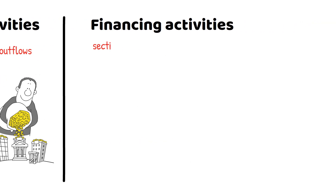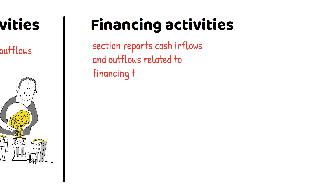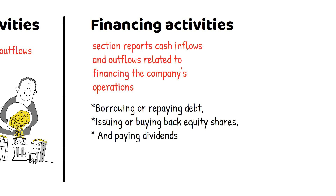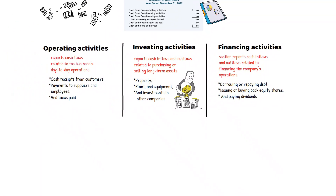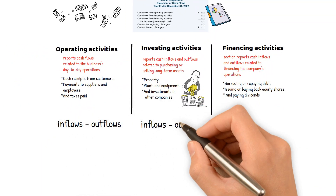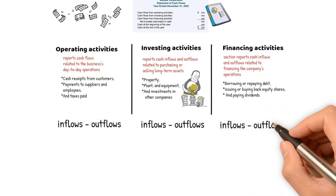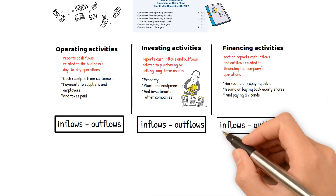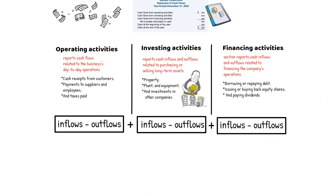The financing activities section reports cash inflows and outflows related to financing the company's operations, such as borrowing or repaying debt, issuing or buying back equity shares, and paying dividends. This section provides information about the company's capital structure and ability to raise and repay funds. At the end of each section, the net cash flow for that activity is calculated, which is the difference between the cash inflows and outflows. The net cash flow from each section is then combined to determine the period's total change in cash and cash equivalents.